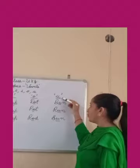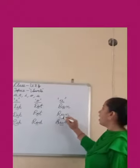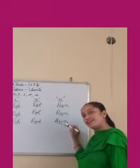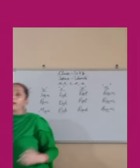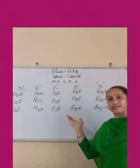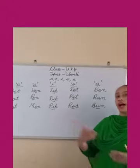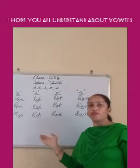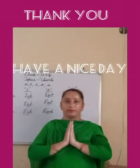And vowel U: BUN, RUN, SUN. We can make so many words like this. So practice this. I hope you all understand about vowels. Thank you. Have a nice day.